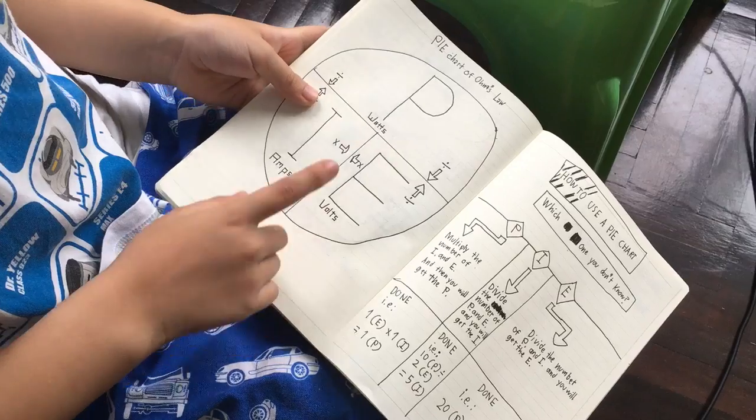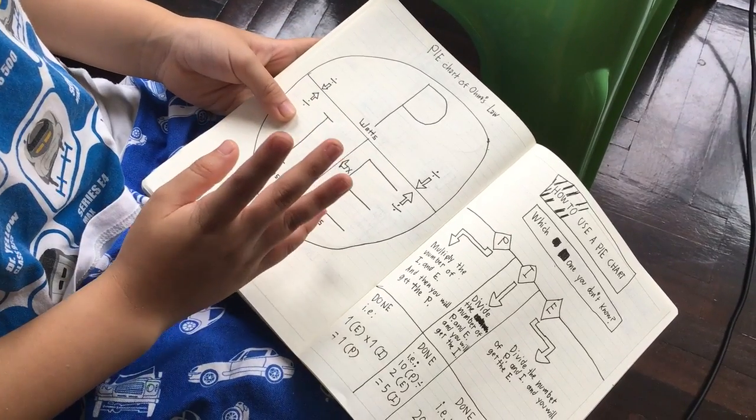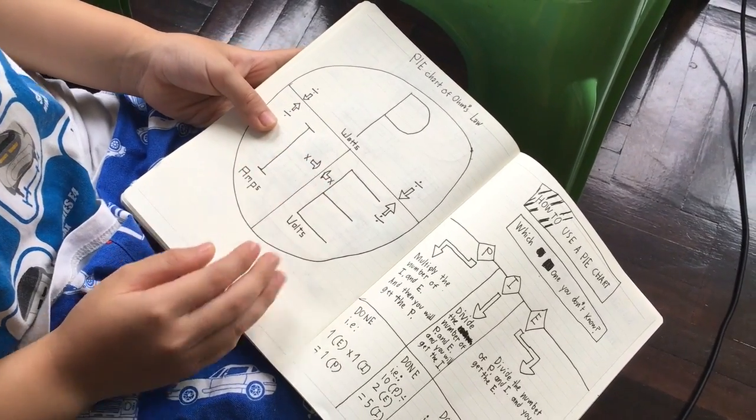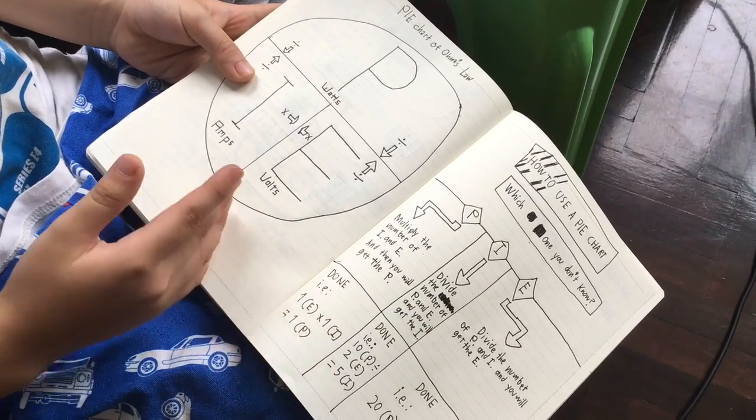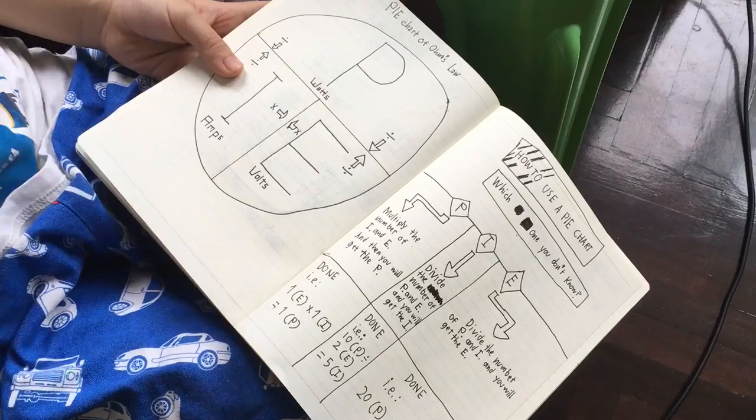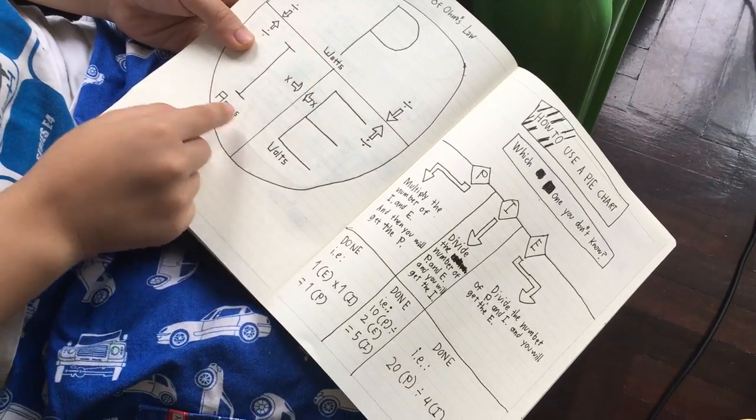So here, this is I, which is amps. Okay. E is volts for electric. Okay. E is volts. Just remember that. Watts, amps, volts. Watts, amps, volts.